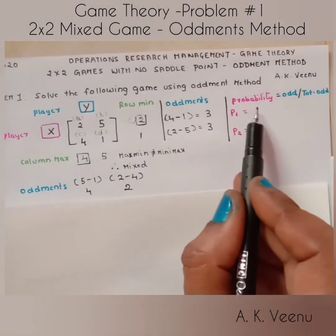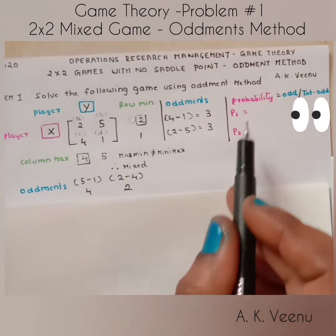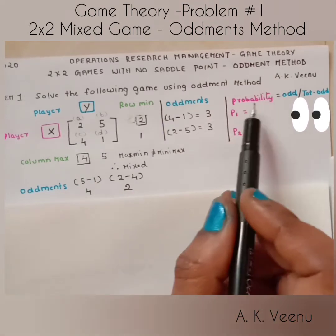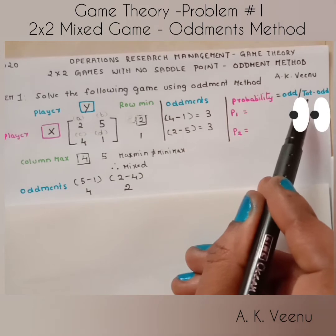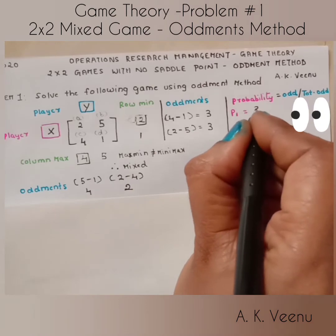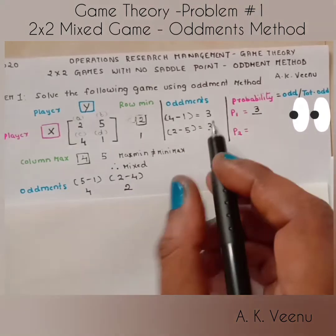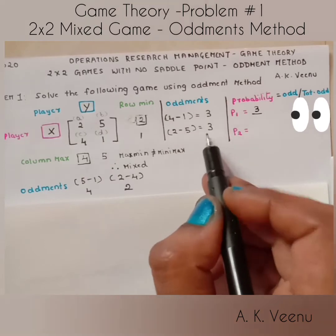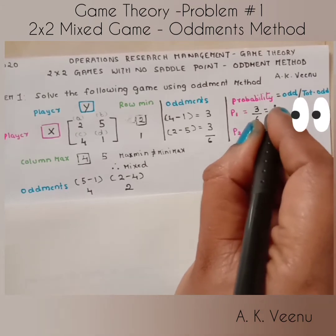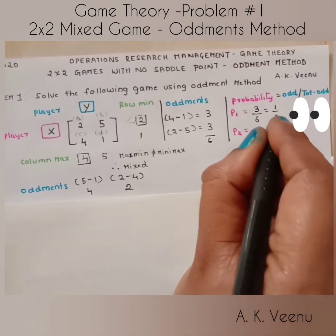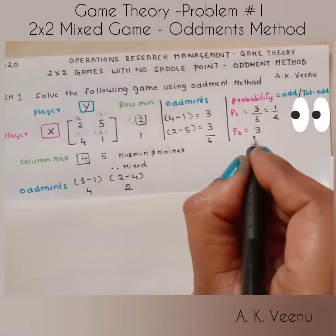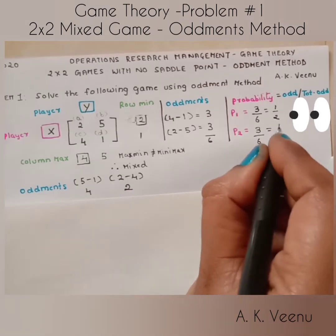Next, we find the probability of player X, denoted p1 and p2. The formula is oddment divided by total oddment. For p1: 3 divided by 6 equals 1/2. For p2: 3 divided by 6 equals 1/2.